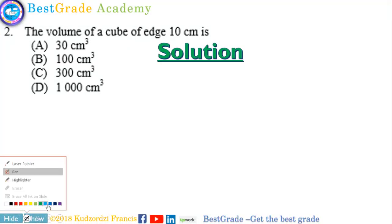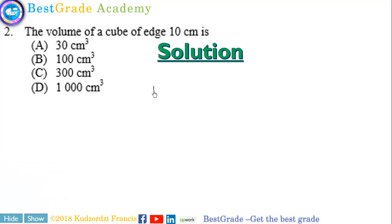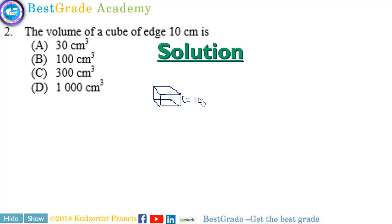Question 2. The volume of a cube of edge 10 cm. Let's sketch the cube. This is the cube. You know the edges — we were told that the edge is 10 cm, that is, one of the sides is 10 cm.